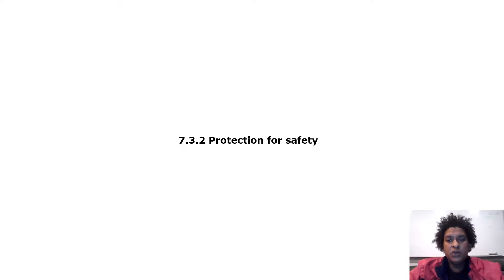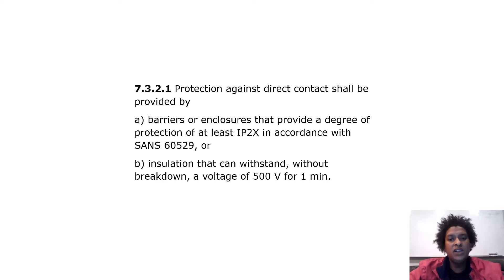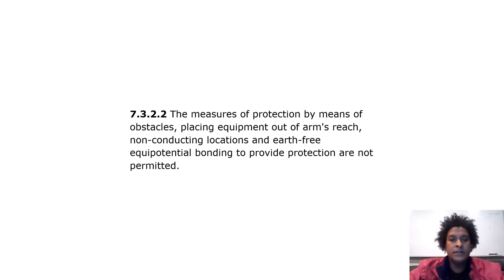Protection for safety: protection against direct contact shall be provided by barriers or enclosures that provide a degree of protection of at least IP2X in accordance with SANS 60529, or insulation that can withstand without breakdown a voltage of 500 volts for one minute. The measures of protection by means of obstacles, placing equipment out of arm's reach, non-conducting locations, and earth-free equipotential bonding are not permitted.